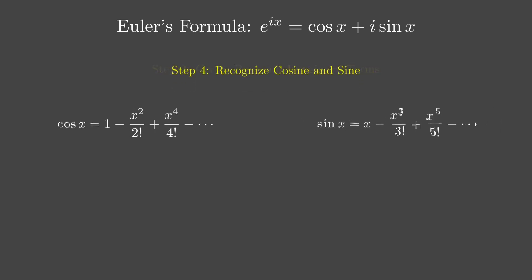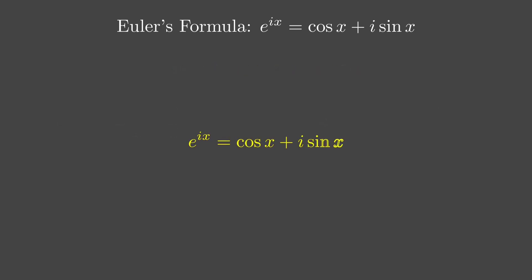Here's where it gets exciting. That real part — 1 minus x squared over 2 plus x to the 4th over 4 minus dots — is exactly the Taylor series for cos x. And the part inside the imaginary term — x minus x cubed over 3 plus x to the 5th over 5 minus dots — matches the series for sin x. So we can rewrite our expression as e to the ix equals cos x plus i sin x. Boom — there's Euler's formula staring us in the face. We've just derived it.